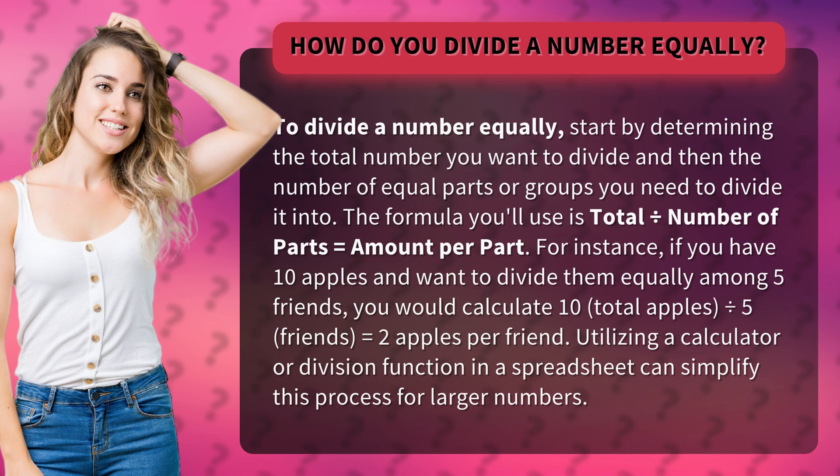For instance, if you have 10 apples and want to divide them equally among 5 friends, you would calculate 10 total apples divided by 5 friends equals 2 apples per friend.